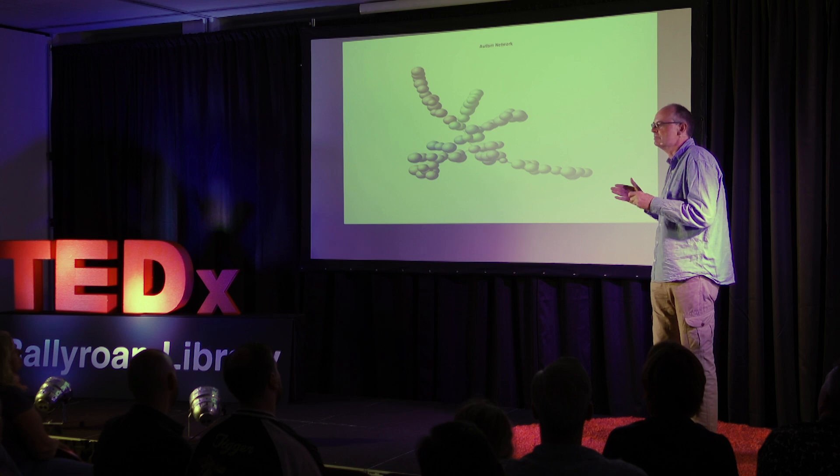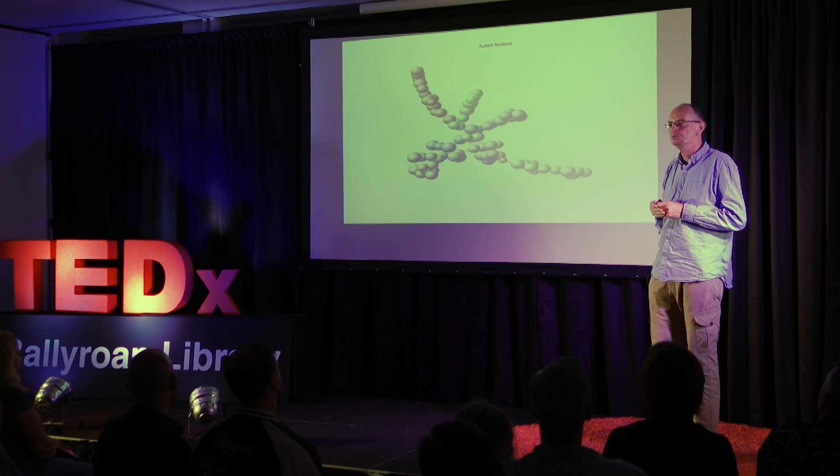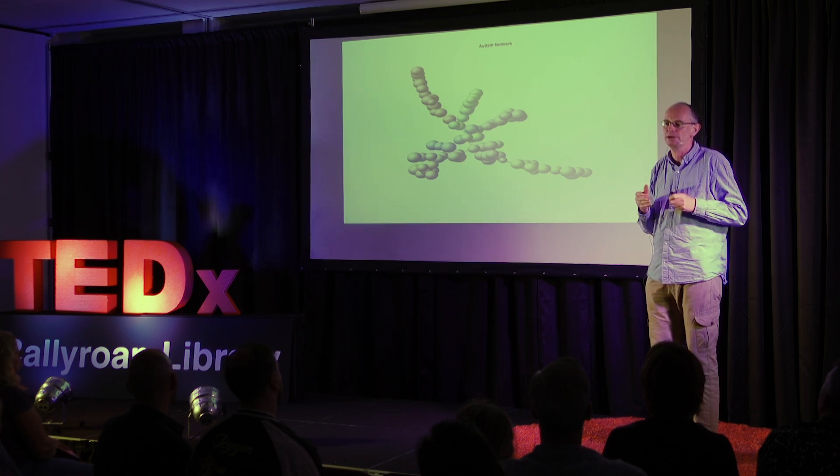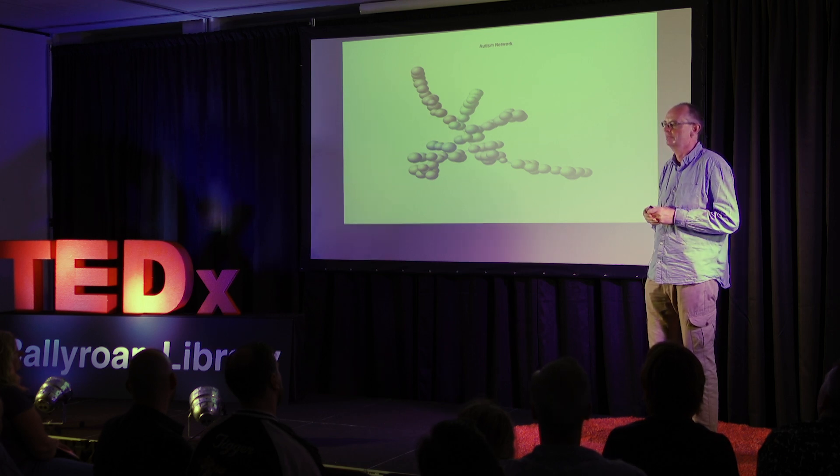We connect genes together to develop this network by looking at ones which have similar patterns — that behave in similar ways in different brain tissues. The idea being that genes that behave in similar ways might be connected biologically, might be in the same pathways. And in such a fashion we can begin to unpick the complex background behind autism and make some progress in understanding this condition.